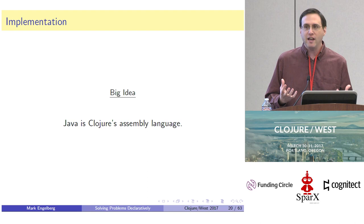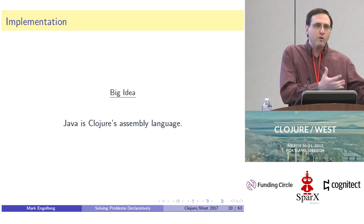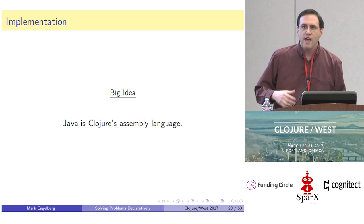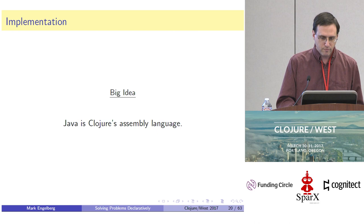I began to embrace this idea that Java is essentially Clojure's assembly language — in the sense that back when I used to do C programming, every once in a while I'd have some highly performant thing I needed to do, and I'd drop down to the assembly level and splice that into my code. I've realized you can do the same kind of thing with Java and Clojure.